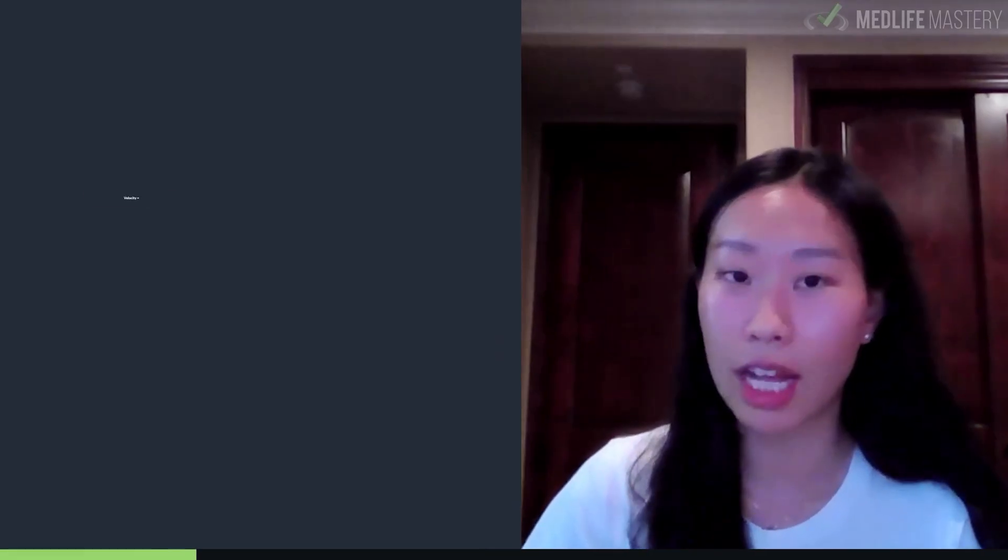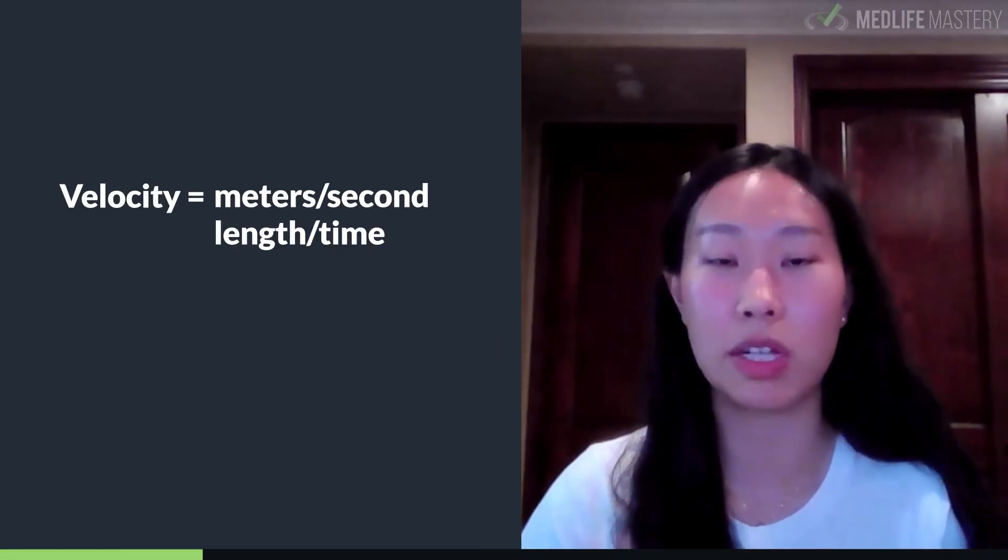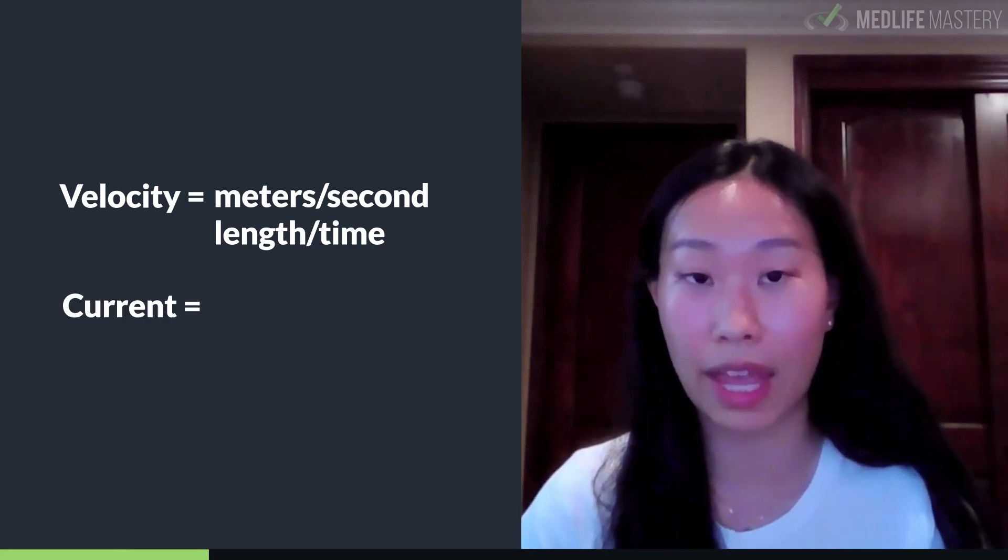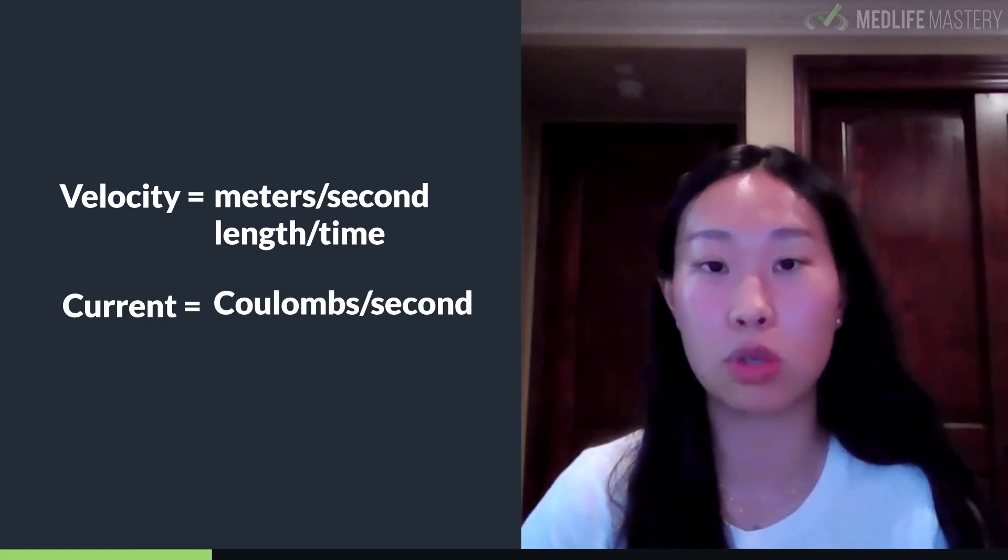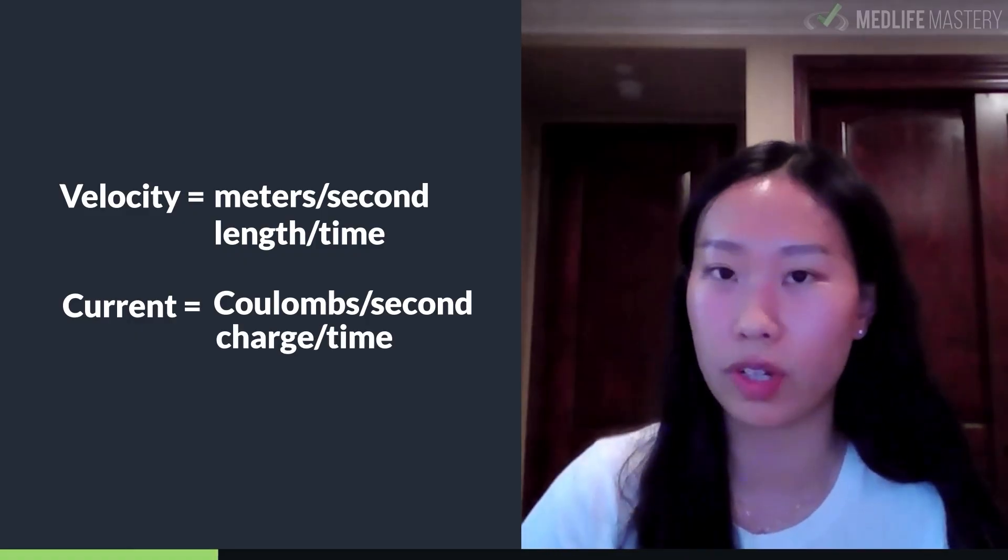For example, we have velocity, which we know has units of meters per second, but this is also the dimensions of length over time. Current, we know has units of amps, which also can be expressed as coulombs per second, but this can also be expressed with dimensions of charge over time.